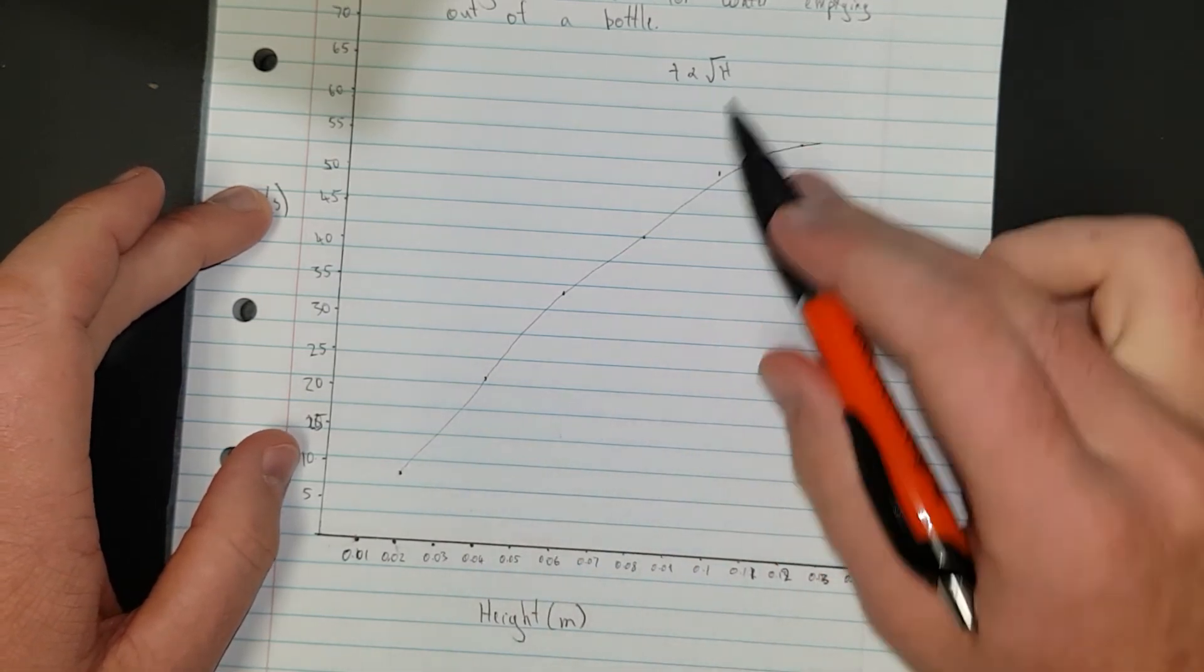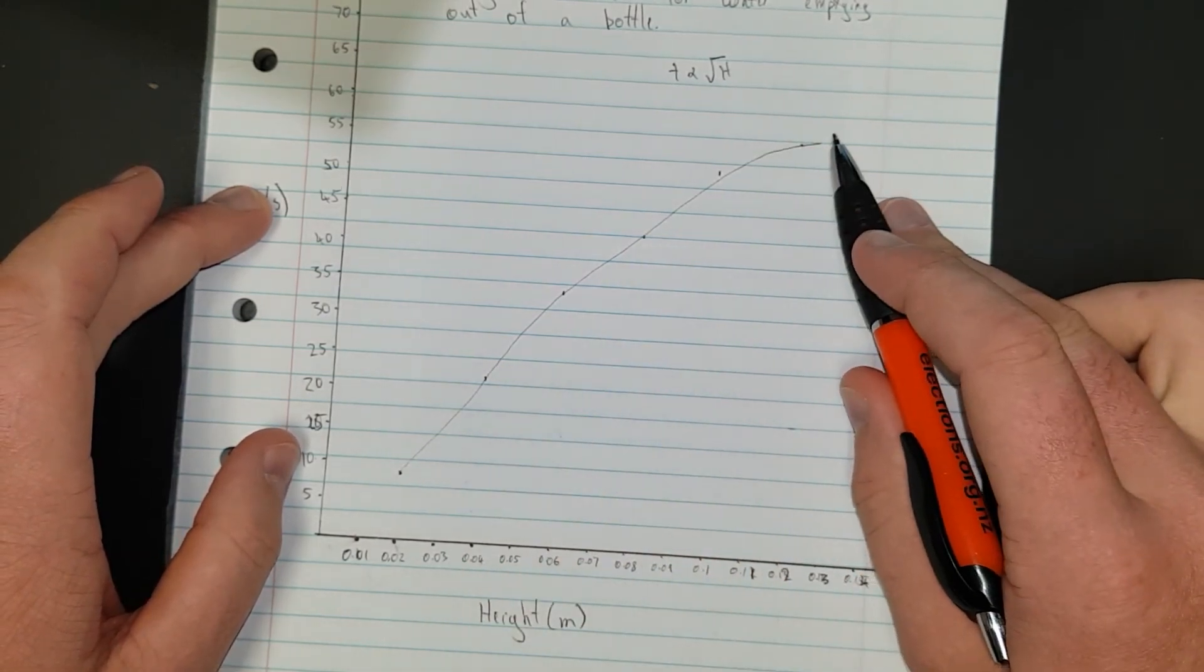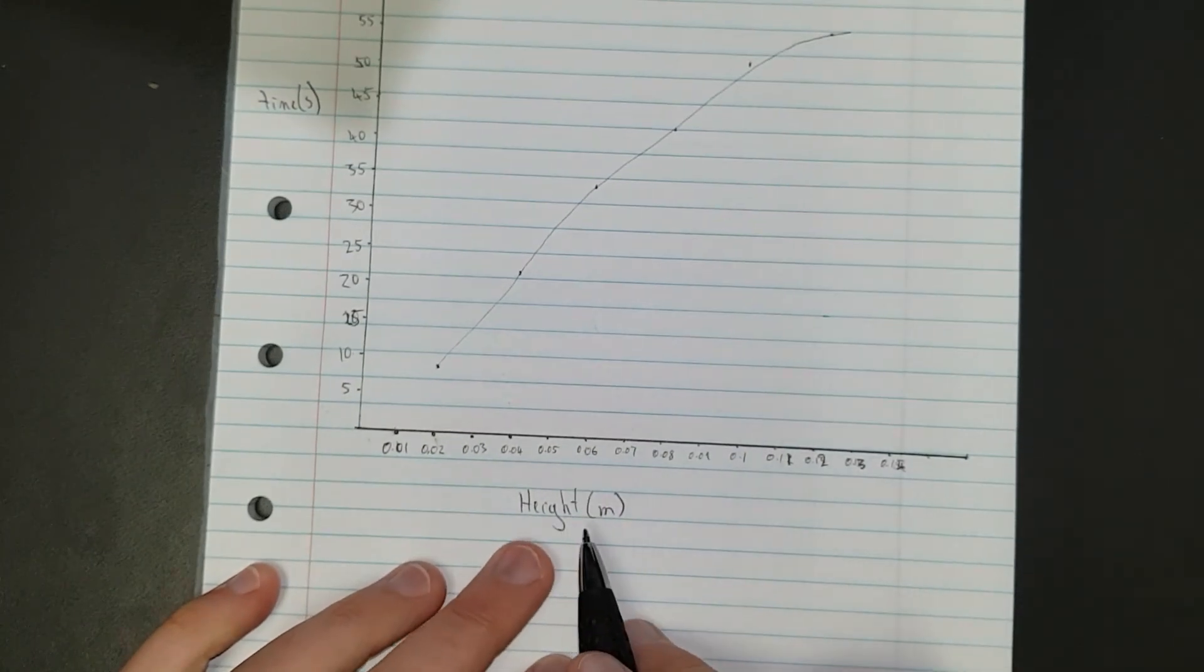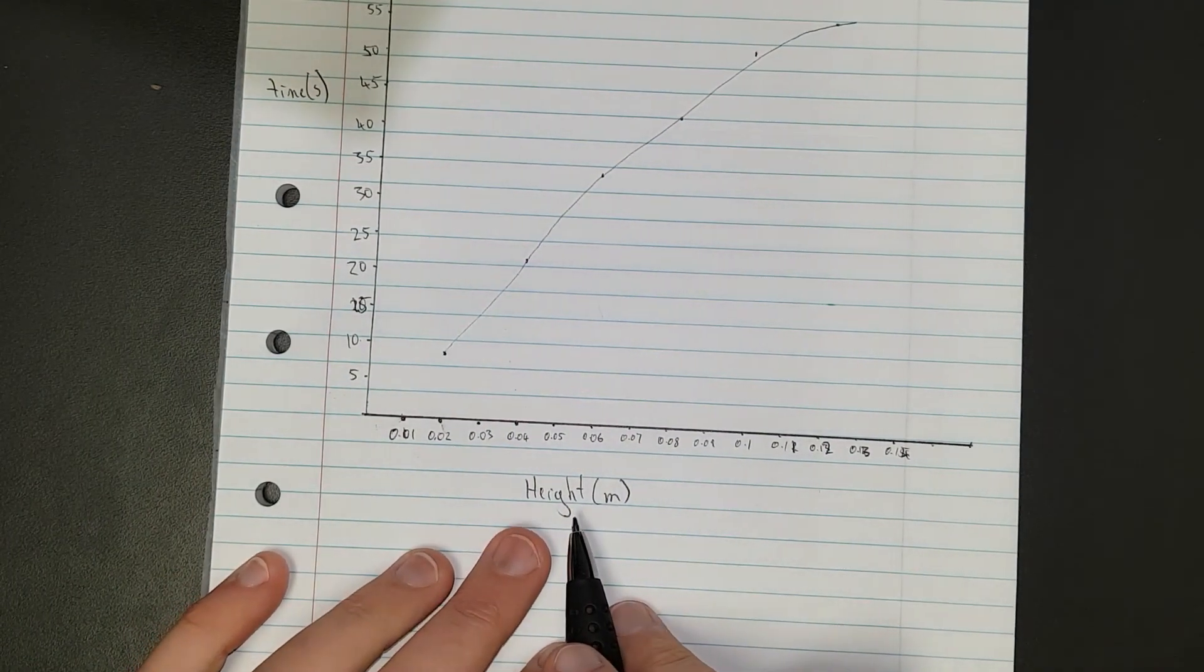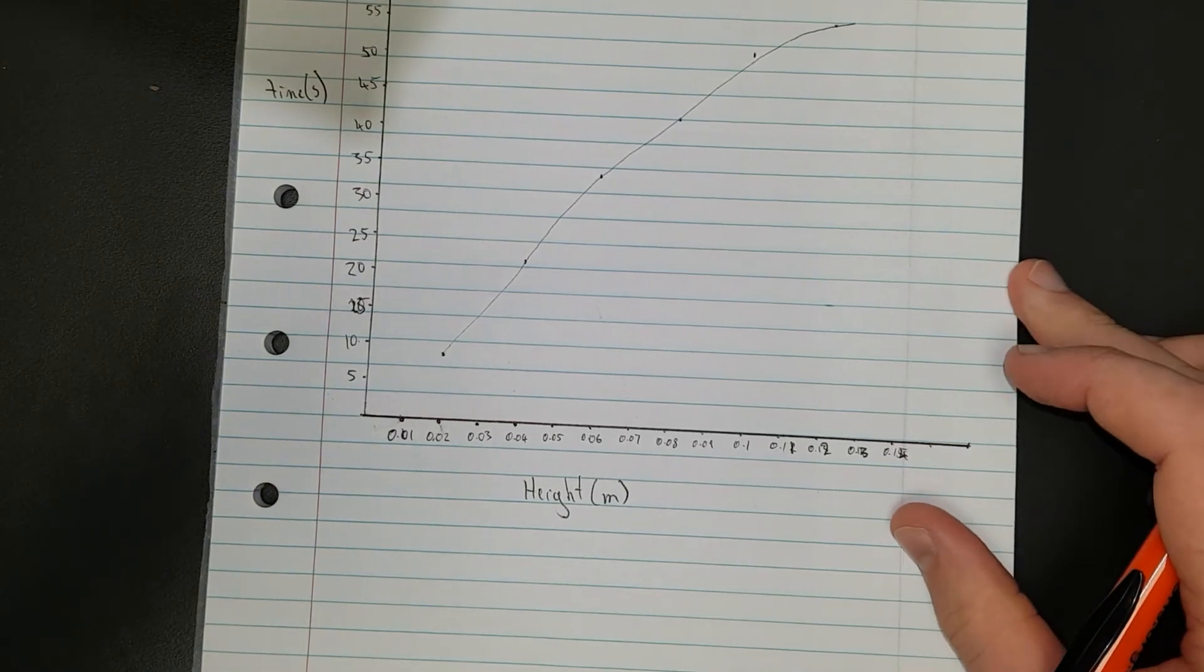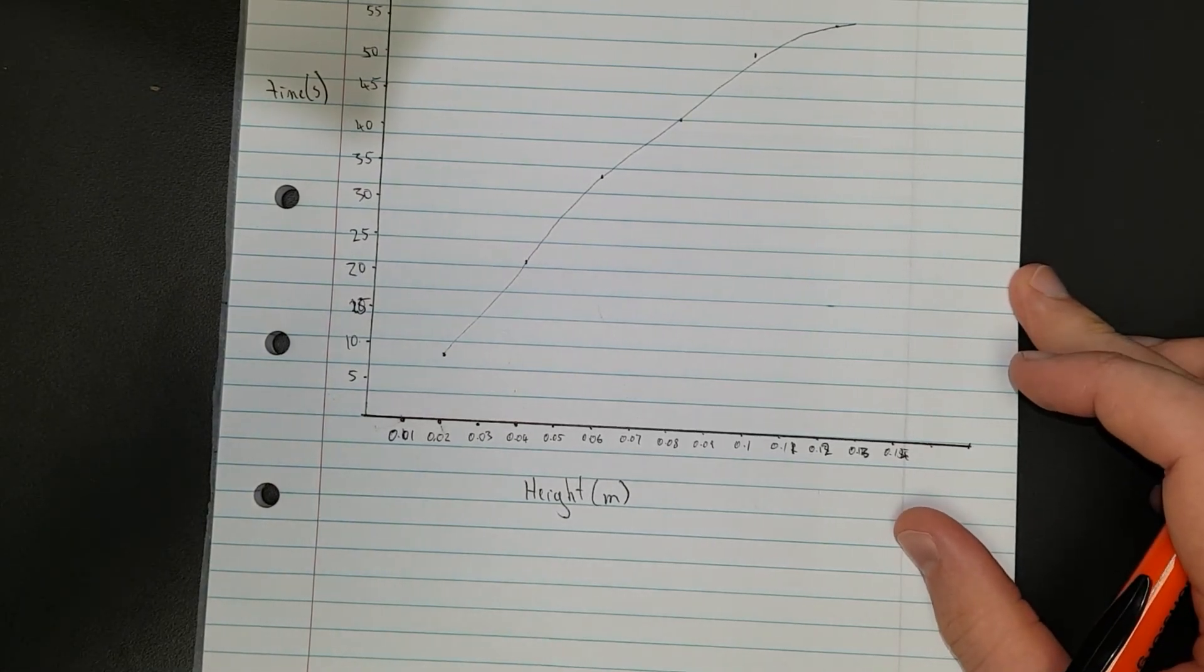You can either give the time a head start and square him as well, or you can put lead weights on the shoes of the height and slow him down by square rooting him. What's going to be easier is to square root the height. I'm going to pause, set up a table, and then we'll go through processing it.